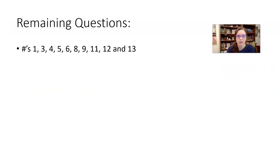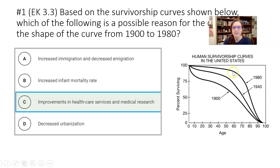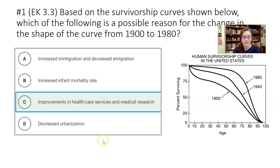Those were the big ones folks had the most trouble with. Now question number one: based on the survivorship curve, which is a possible reason for the change in shape from 1900 to 1980? The bulge went out, meaning people are living longer — into their 70s, 80s, even 90s. Increased immigration? Not really going to increase survivorship. Increased infant mortality? Definitely not. Improvements in healthcare? Yes, that'll help us live longer. Decreased urbanization doesn't give a distinct factor for increasing longevity.